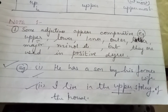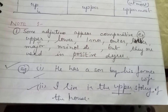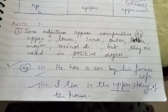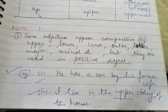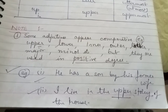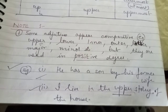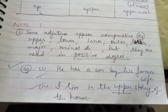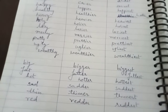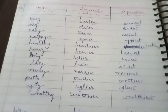The very first point is: some adjectives appear comparative — like upper, lower, inner, outer, latter, major, minor, etc. — but they are used in positive degree. There are some adjectives that, if you look at the spelling, end with ER. You will know that the comparative degree of adjective ends with ER. Look at this list, which has been shown in the last video. The comparative degrees of adjectives end in ER.